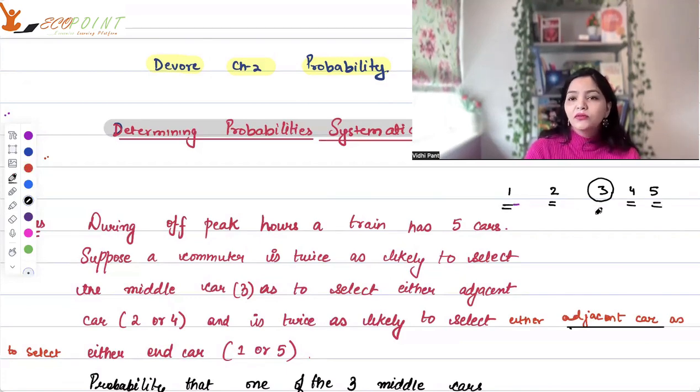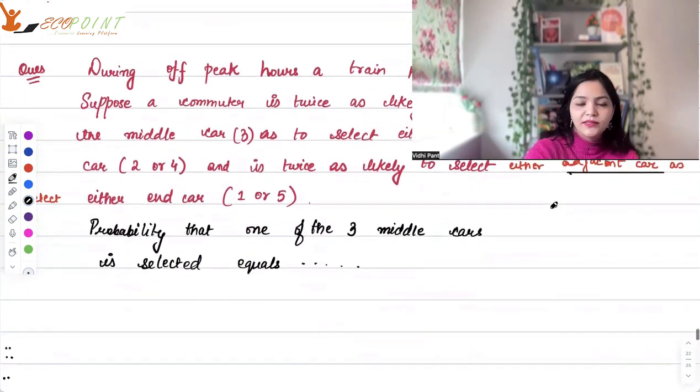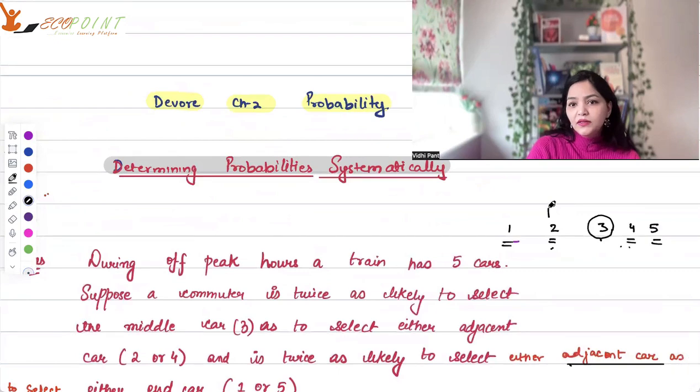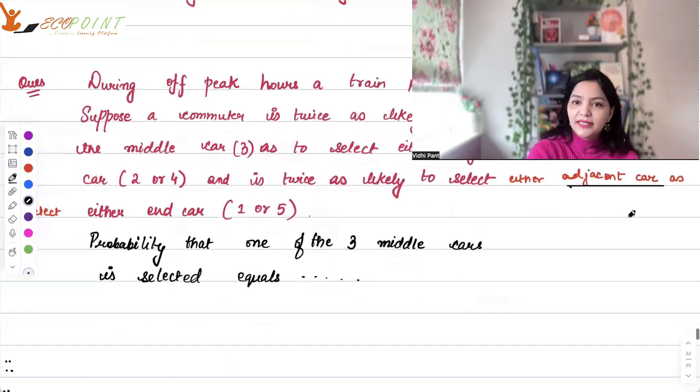What does this basically mean? So this person has twice probability of selecting three, number three in comparison to two, four and of two, four, selecting two, four in comparison to one, five. That's what is provided to us. We need to find the probability that one of the three middle cars is selected. One of the three middle cars. Three middle cars would be two, three, four. So we need to find the probability that second or third or fourth is selected. One of them is selected. How to go about it?